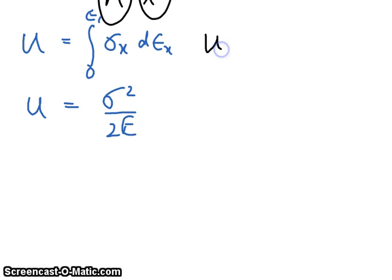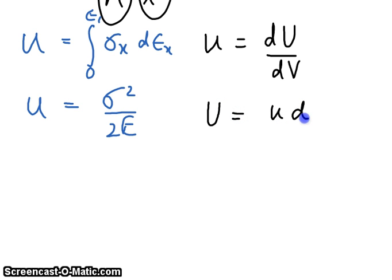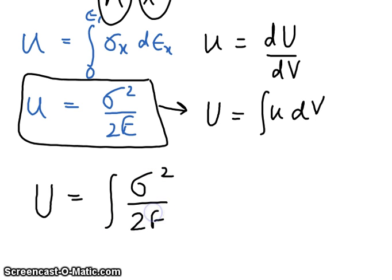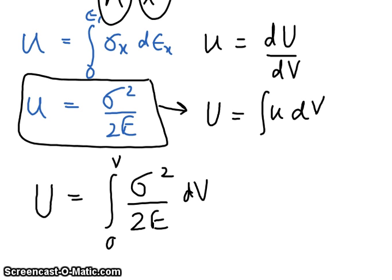Now, if strain energy density is dU by dV, then strain energy U can be written as the integral of u dV. This is what we're going to be using. Putting this back, you get the integral of sigma squared by 2E dV, with limits 0 to V. This is the basic equation that we're going to be working with for different cases of loading.